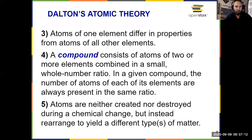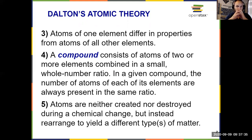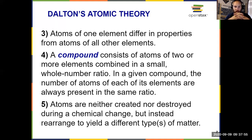Postulates three, four, and five. Postulate three: atoms of one element differ in properties from atoms of all other elements — that's why we have different elements on the periodic table. Postulate four, which we touched on in chapter one: a compound, which is different from an element, consists of two or more elements combined in a small whole number ratio. For whatever compound we're dealing with, the number of atoms of each element are always present in the same ratio — one to one, one to two, two to three — but always the same ratio throughout. And lastly, postulate five: atoms are neither created nor destroyed during a chemical change, but instead rearranged to yield a different type of matter — what we already know from chapter one as the law of conservation of matter.